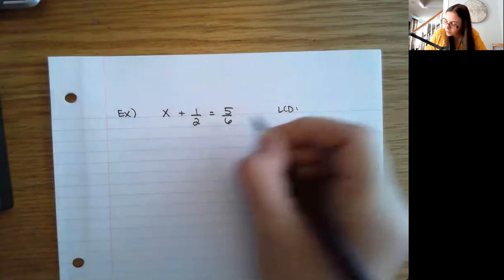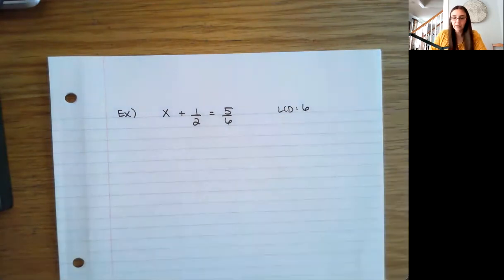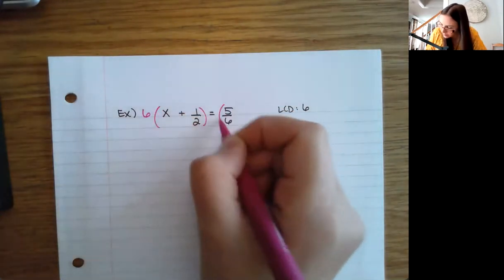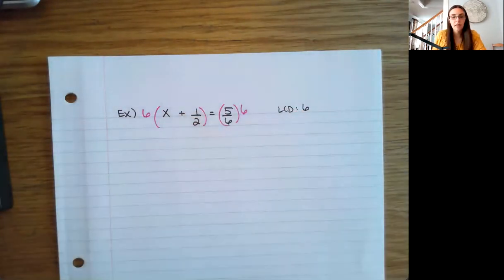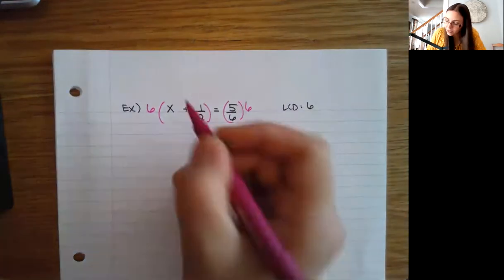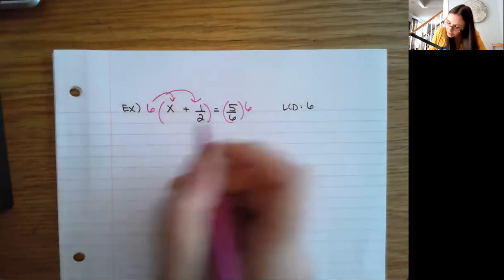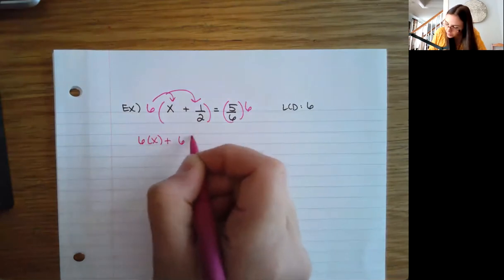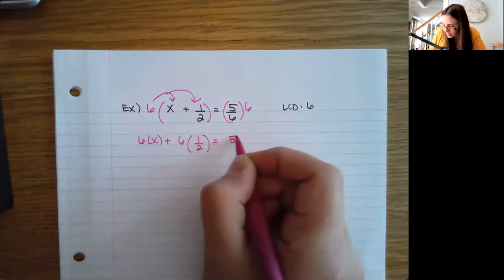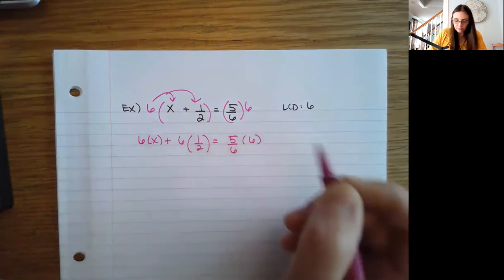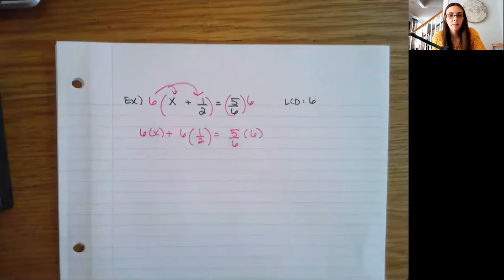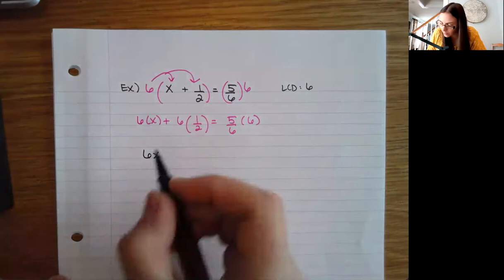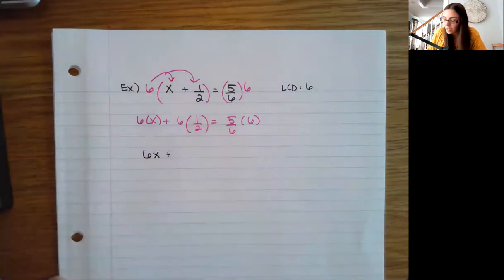For two and six, I can use six. So I'm going to multiply both sides by six. When you do that, because I have addition here, I do have to use the distributive property. So I rewrite it as: six times x plus six times one half equals five sixths times six. Six times x is just 6x.